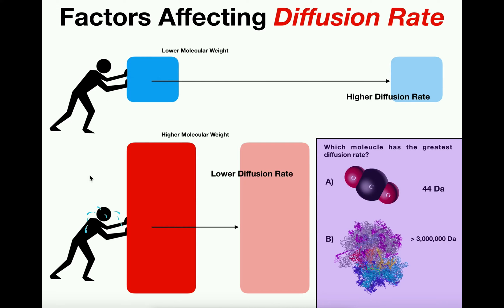If this man uses the exact same force on each of these blocks, which one is he going to move farther? Logically, he should be able to move the small blue block farther because it's lighter — he can accelerate it more quickly and it moves faster. The guy using the same force on the much heavier red block won't be able to move it as quickly, so it won't travel as far.